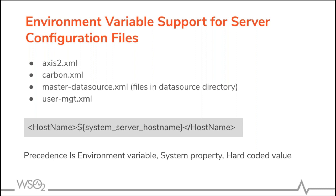Currently, the given files support parameterized configuration with system properties — specifically axis2.xml, carbon.xml, master-datasources.xml, and user-management.xml. With the EI 6.6.0 release, we have given environment variable support for these as well. For example, if we parameterize as in the given sample, the precedence will be given to the environment variable. If the environment variable is defined as 'system_server_hostname', it will be picked. Then if it hasn't been defined, the system property will be taken, and if not, the hardcoded value will be taken. This is the environment variable support for server configuration files.